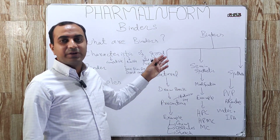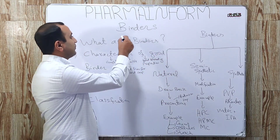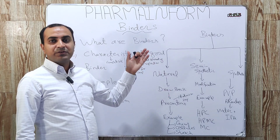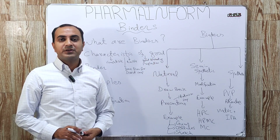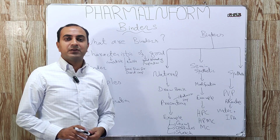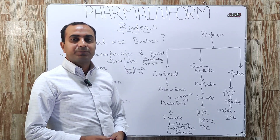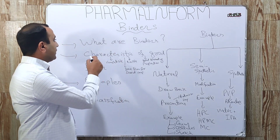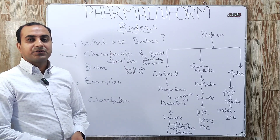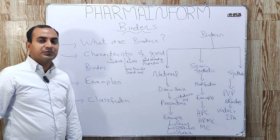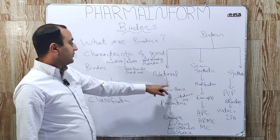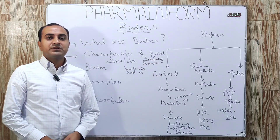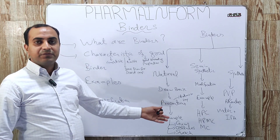Assalamu alaikum, welcome to another informative video. Today we will discuss binders. We have started a playlist about excipients — the link to the complete playlist is in the description. We have discussed diluents, excipient classification, and today we will discuss what binders are. In this video we will learn what binders are, the characteristics of a good binder, examples of binders, and how binders are classified. Binders are classified into three types.